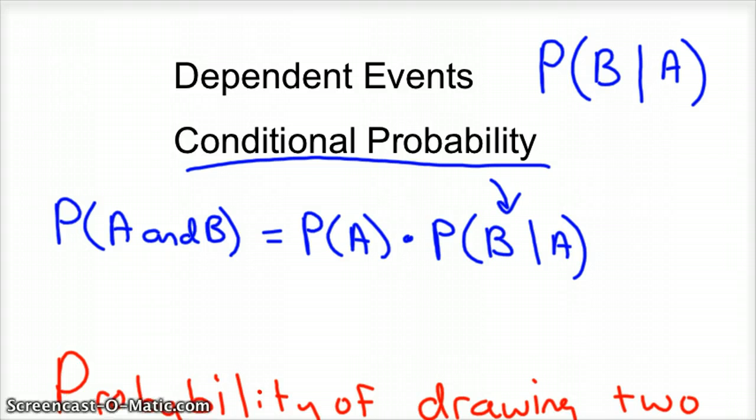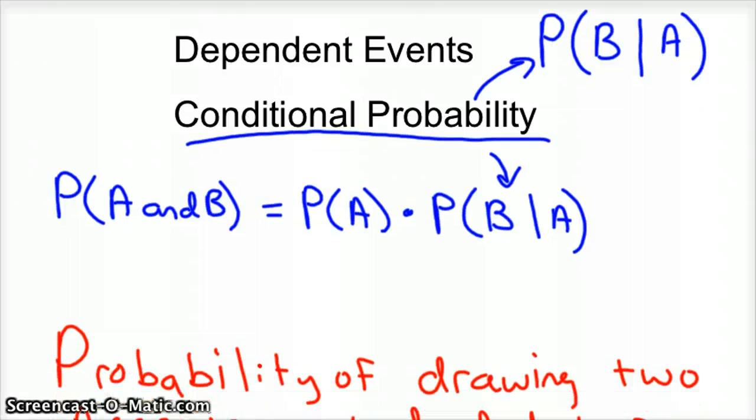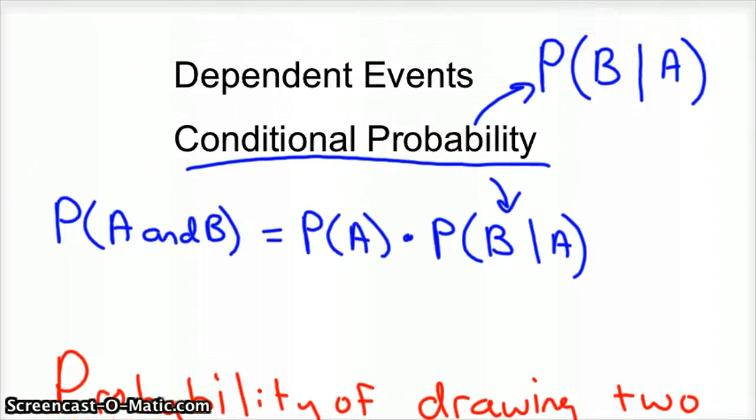And you know, mathematicians, we love our symbols. And so that's generally what that stands for. Again, whenever you see that bar in a probability, you can insert the word given. And so this is set B or event B, and this is set A or event A.